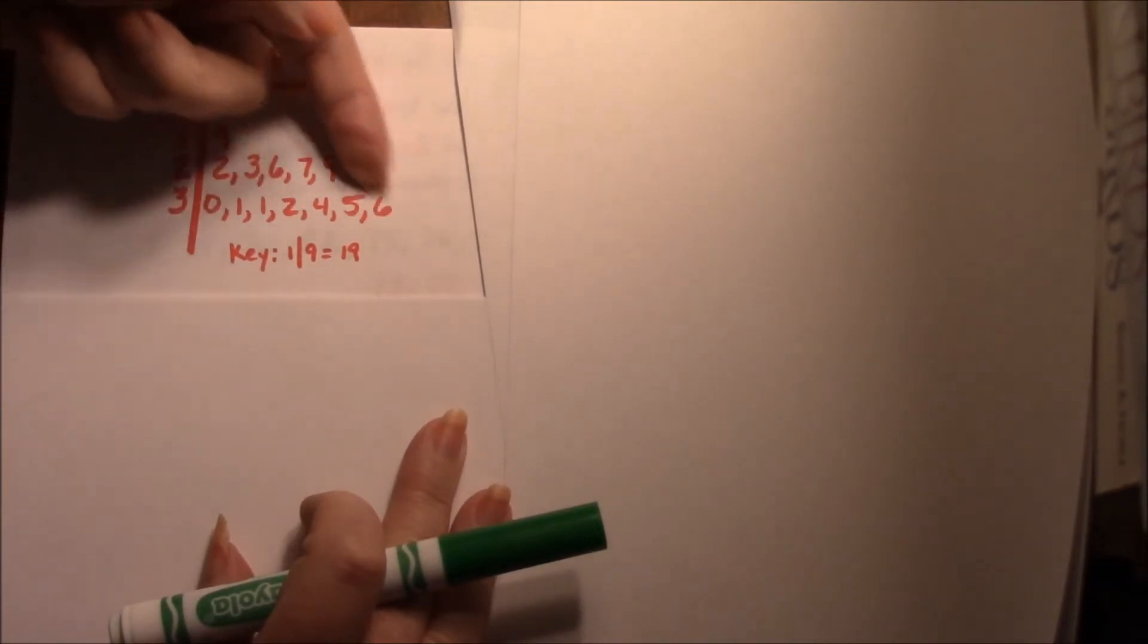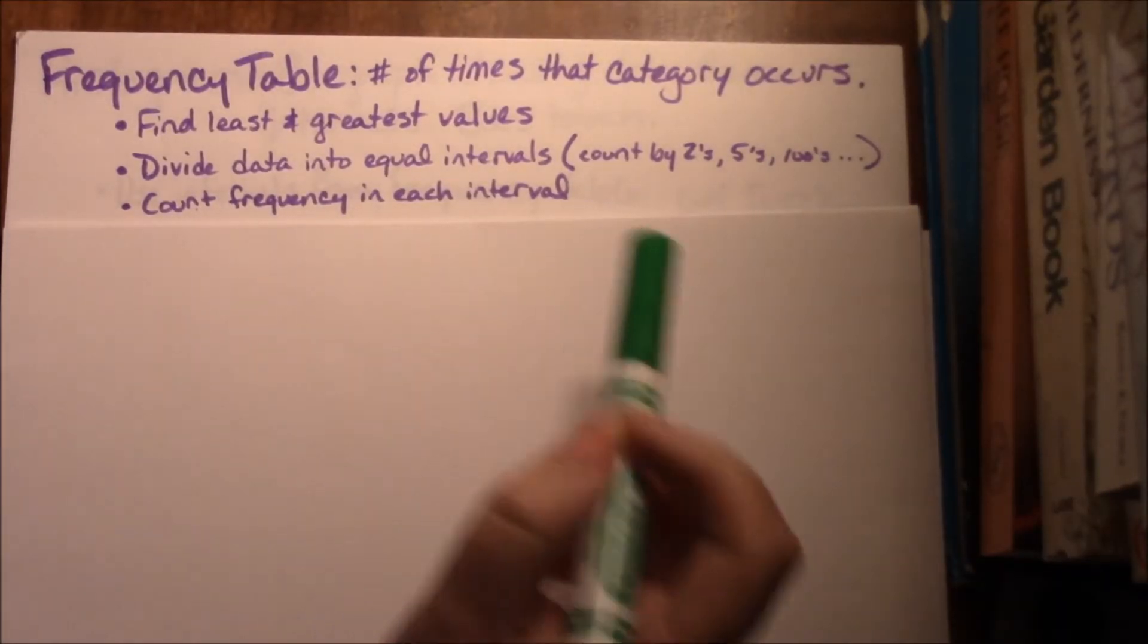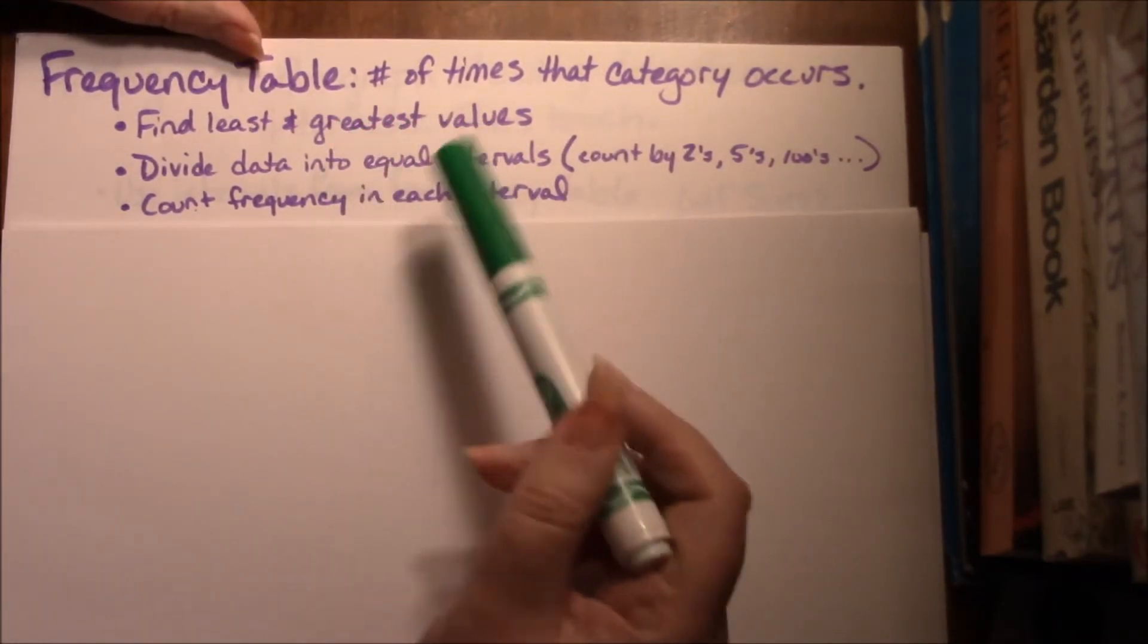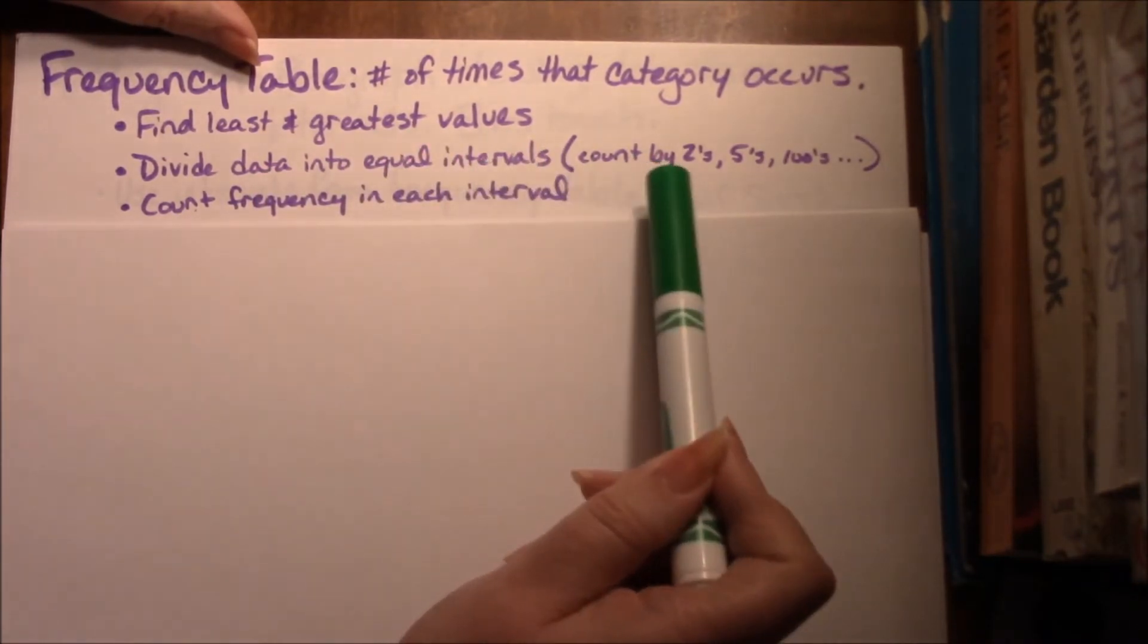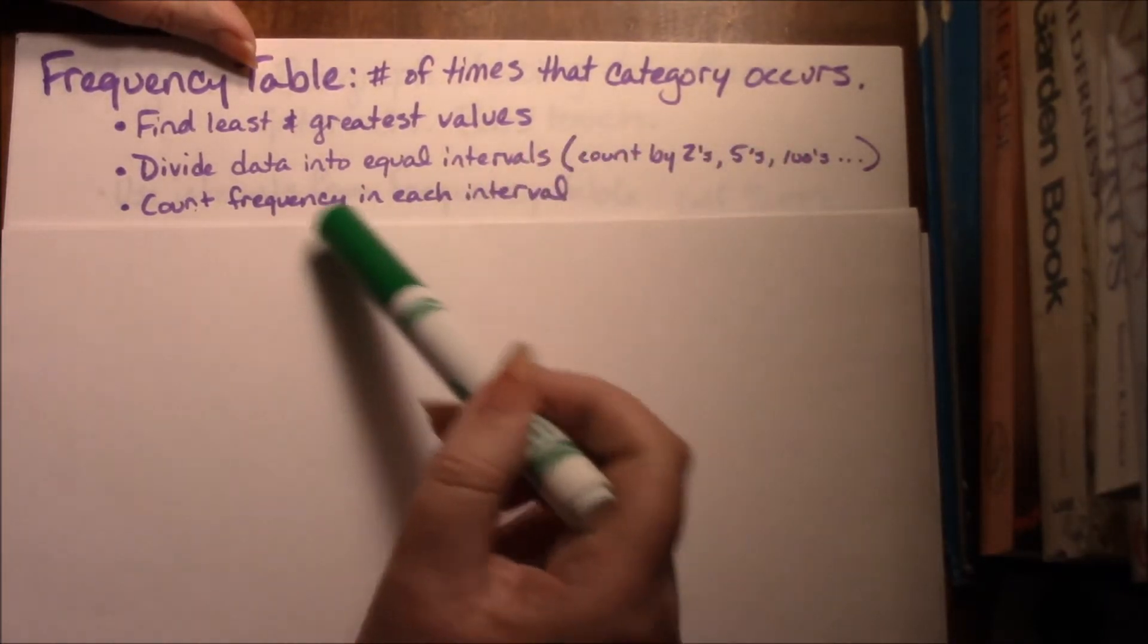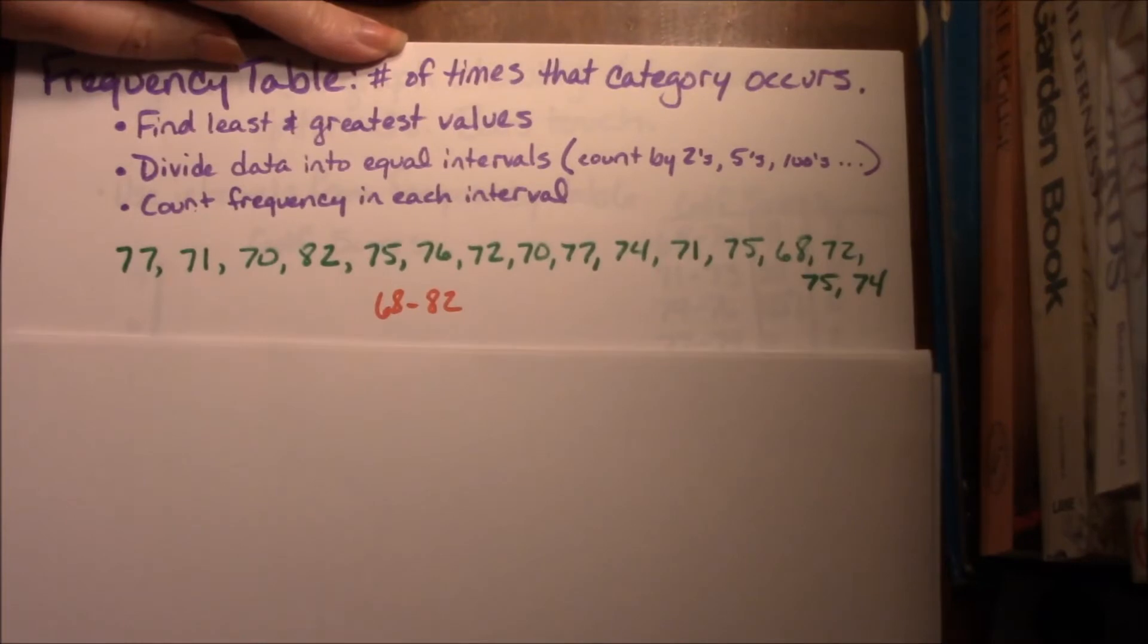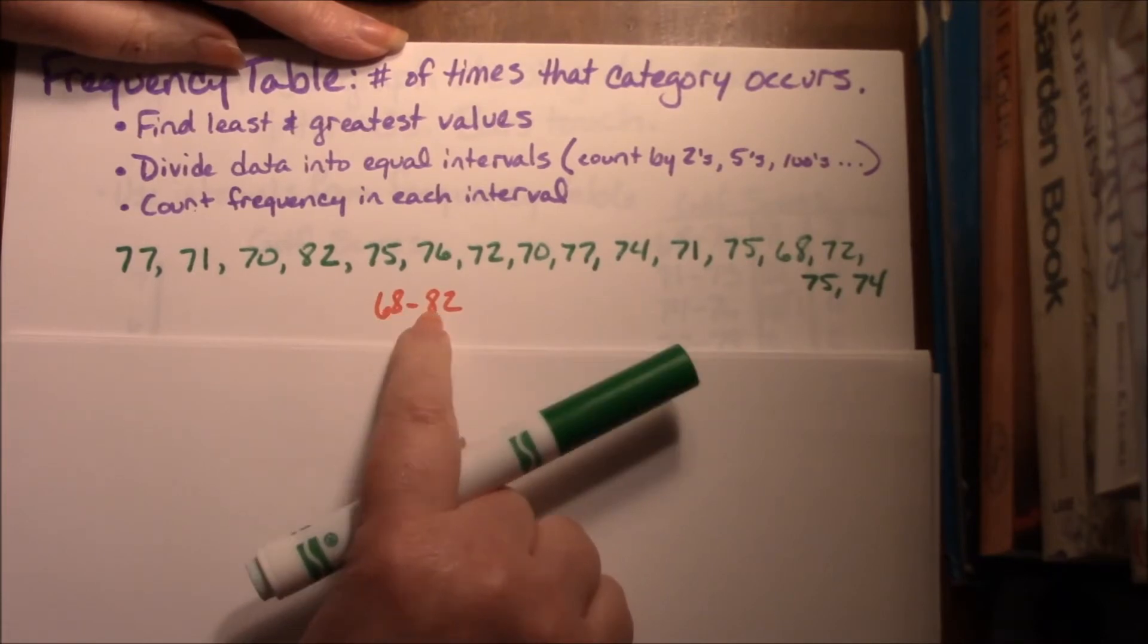A frequency table is a table that shows the number of times that a category occurs. You're going to find the least and greatest values, divide the data into equal intervals, which means you count by twos or fives or hundreds or whatever is convenient, and then count how frequent it is in each interval. For example, if you're given a list of numbers that look like this, you're going to find the least and the greatest. It goes from 68 to 82.